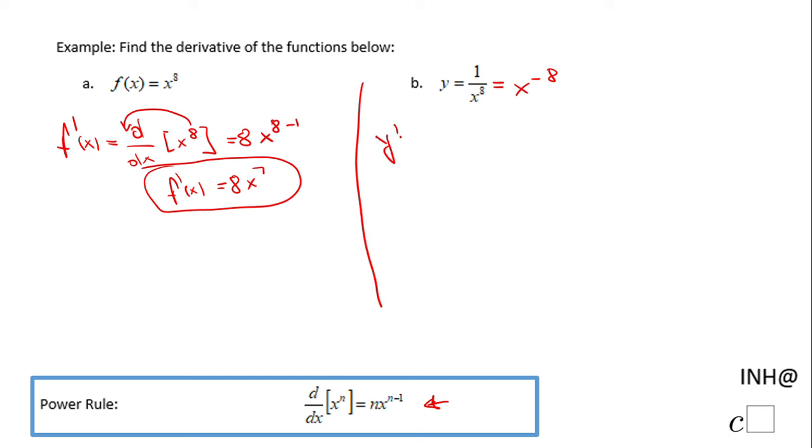And now, y prime would be the derivative with respect to x of x to the negative 8th power. Similar with the other example, we're going to move the exponent, which in this case is a negative number, negative 8, up front: x to the power of negative 8 minus 1.